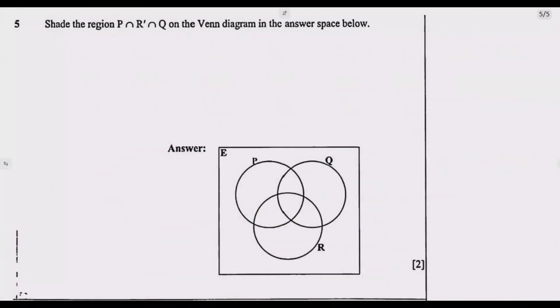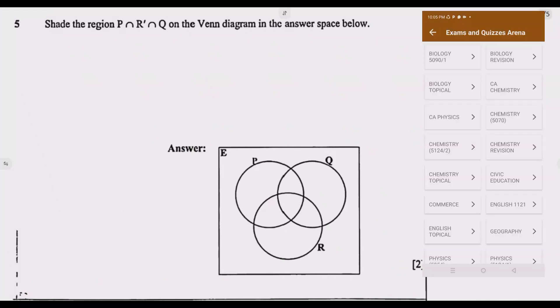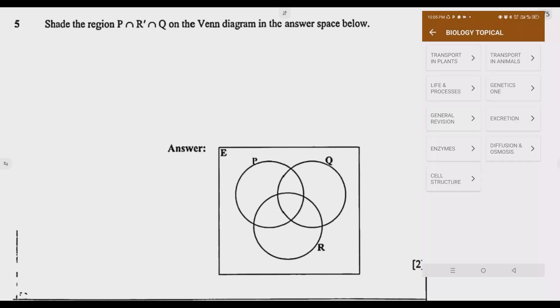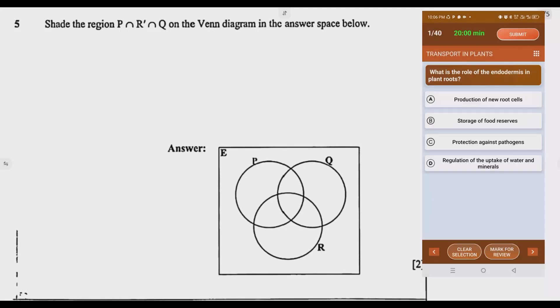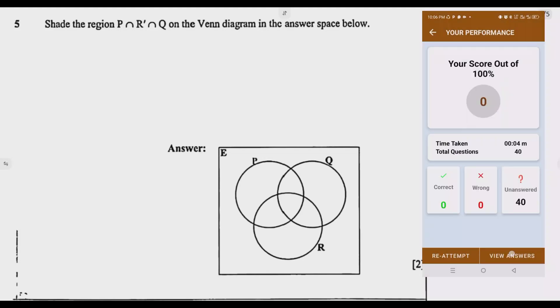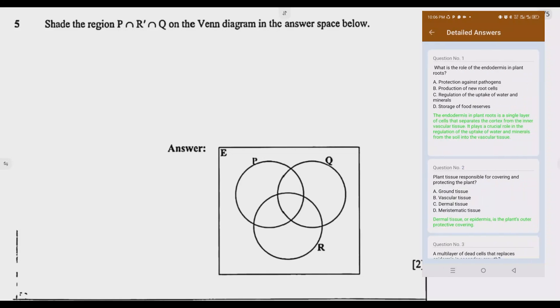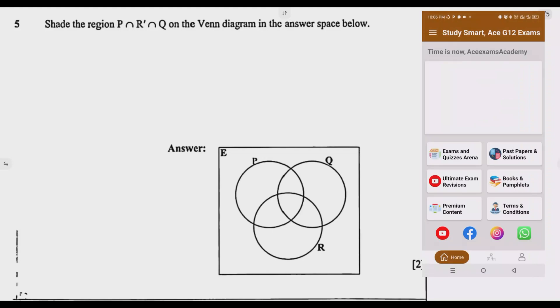We look at question 5. Shade the region P intersection R complement intersection Q on the Venn diagram in the answer space below. What is key here is understanding what R complement means. R complement means what is not found in R.